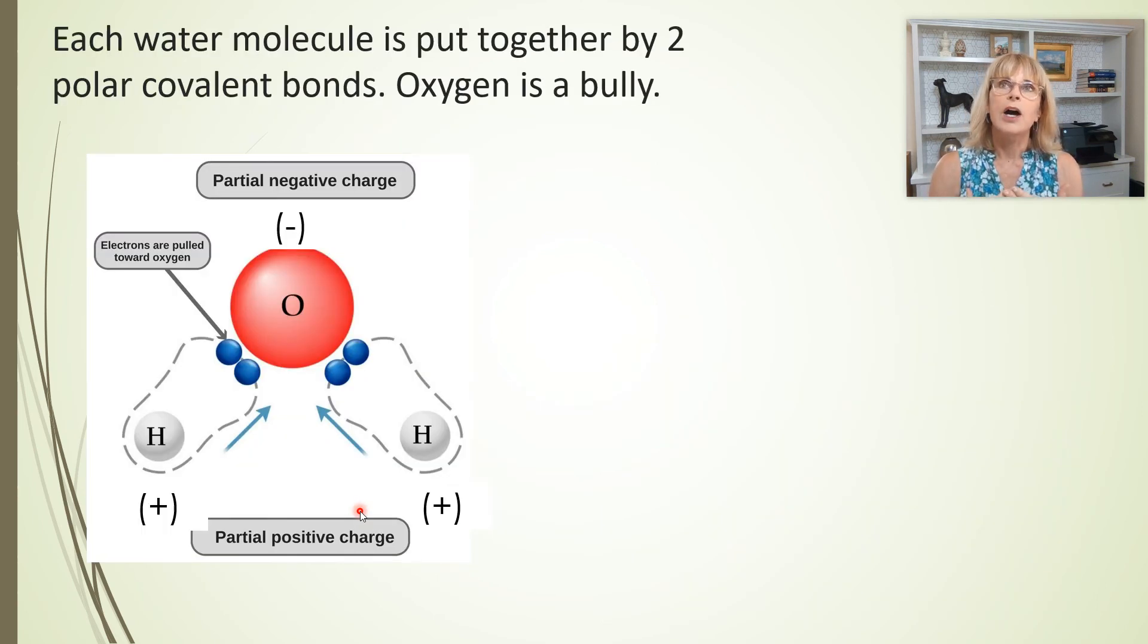Covalent bonds come in two different types. The example here of a water molecule shows polar covalent bonds. So here we've got little tiny hydrogens. Each one of them has a single proton and one electron in the only electron shell. And here we've got a big oxygen. It's got eight protons plus neutrons and eight electrons with six in its outer shell.